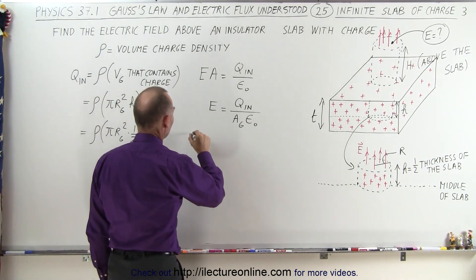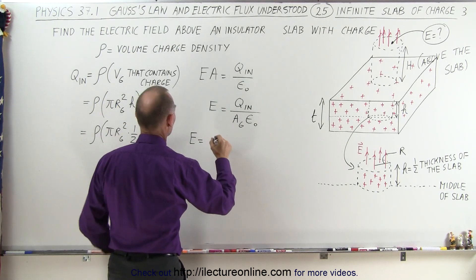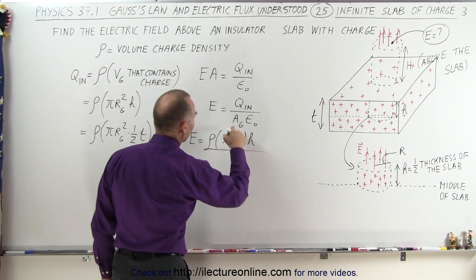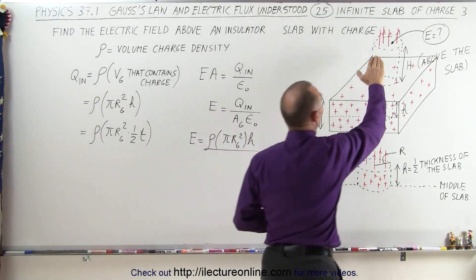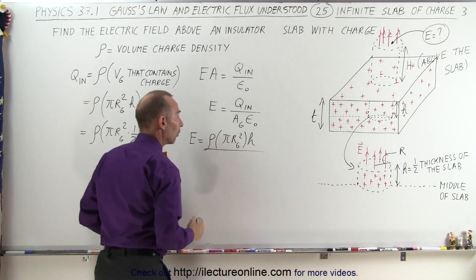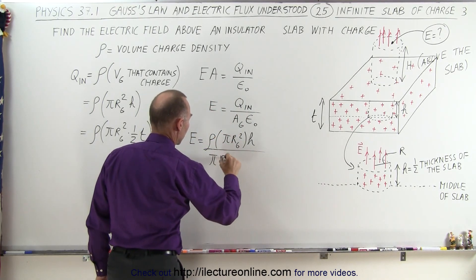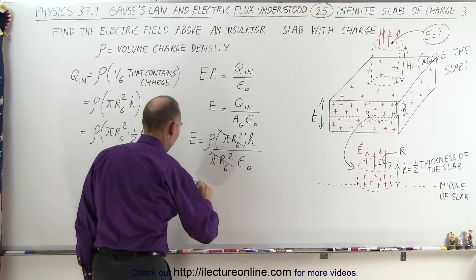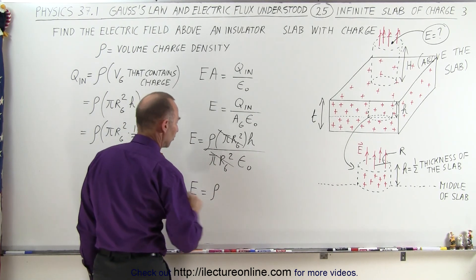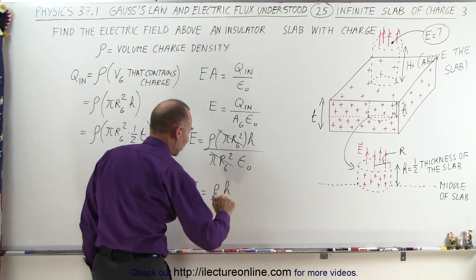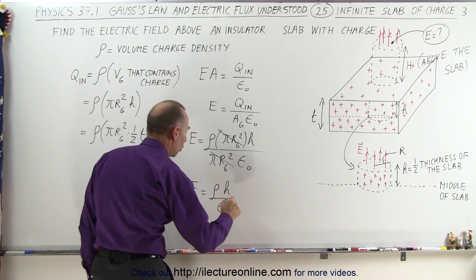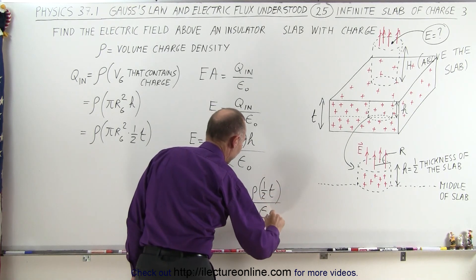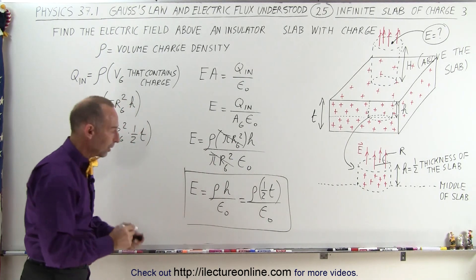Let's plug all that in. The electric field equals Q inside — which is the density times pi r sub g squared times small h — divided by the surface area of the Gaussian surface, which is only the very top portion with flux going through: pi r sub g squared times epsilon sub-naught. The pi r sub g squared cancels out, and the electric field above the slab equals the volume charge density times h divided by epsilon sub-naught, or equivalently, the density times half the thickness of the slab divided by epsilon sub-naught.